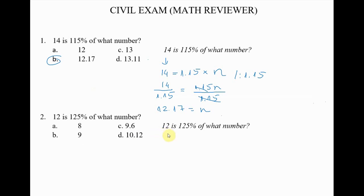Okay, if you're back, let's do question number two together. 12 is 125 percent of what number. So what we do is we copy 12 here. 'Is' is equivalent to equal. 125 we convert it to decimal point and we have 1.25.